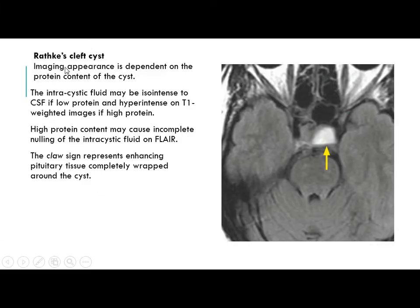Rathke's cleft cyst imaging appearance depends on the protein content of the cyst. The intracystic fluid may be iso-intense to CSF if low protein content, or hyper-intense on T1-weighted imaging if high protein content. The high protein content causes incomplete nulling of the intracystic fluid on FLAIR. There is also a cleft sign, which represents enhancing pituitary tissue completely wrapped around the cyst.